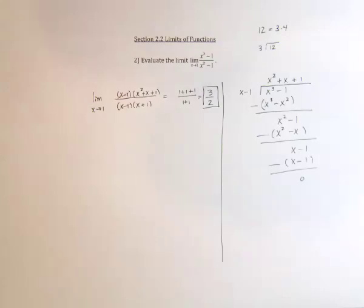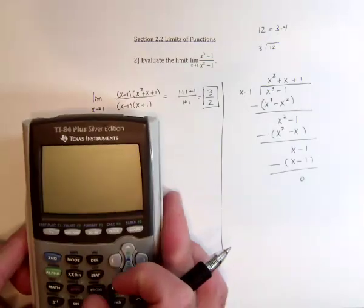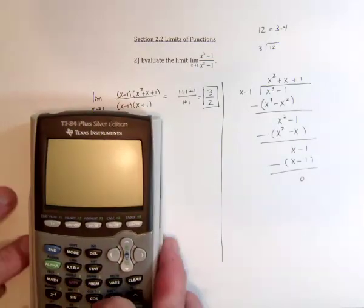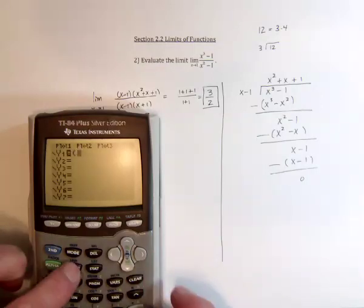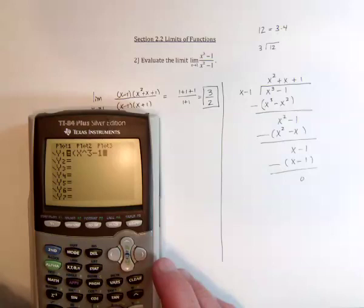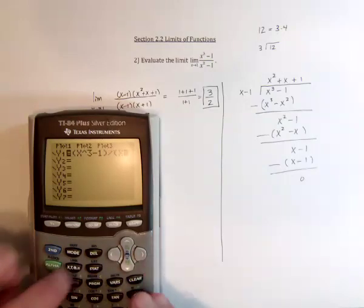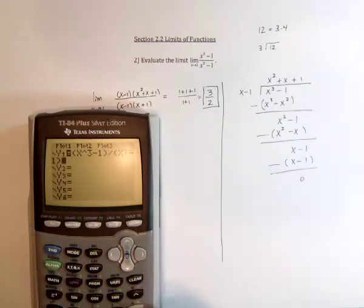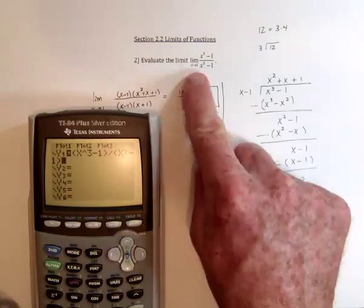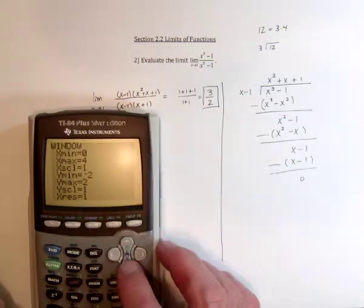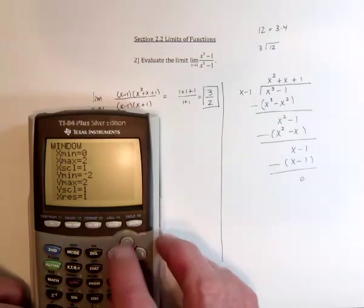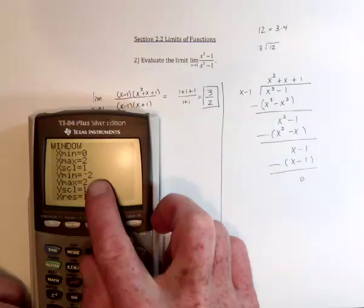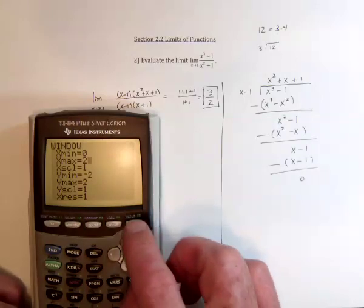And then it's always a good idea to take a look at the graph and verify that we got it right. So the original one is x cubed minus 1 divided by x squared minus 1. And we're talking about where x equals 1, so the window should go something like 0 to 2. And the answer is 1 and a half, so going from negative 2 to 2 should cover it. And then take a look at the graph.